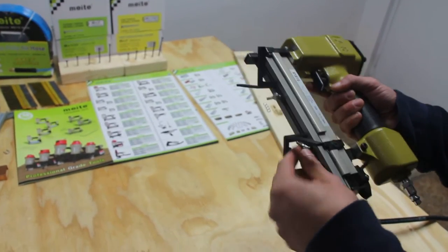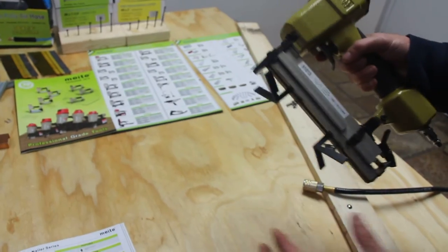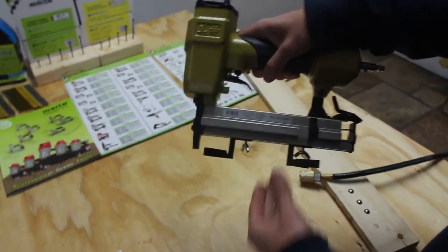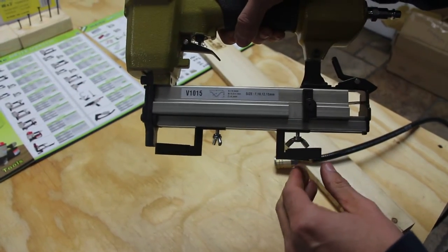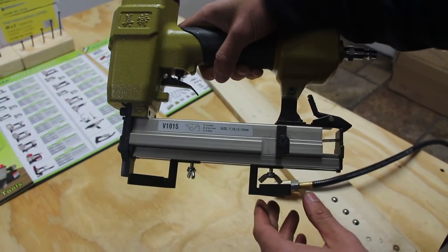Righty tighty, lefty loosey. Basic. Alright, now the V-nailers, there's four different types, four different sizes: we have 7, 10, 12, and 15 millimeters.